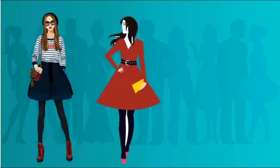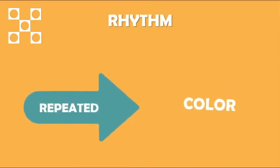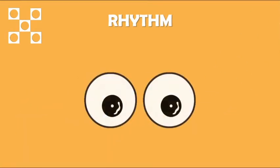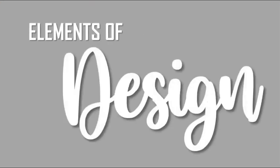The fifth and last principle of design is rhythm. Rhythm is the movement of the eye from one part of the design to other parts. Repetition of a line or shape is one of the most common ways of attaining rhythm. Rhythm can also be referred to as the repeated use of lines, colors, trims, shapes, or details that create a pattern the eye can follow throughout the design. Examples could be stripes, polka dots, ruffles, and so on. Now let us discuss elements of design.